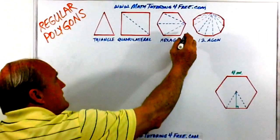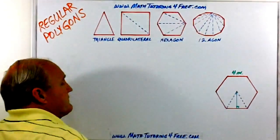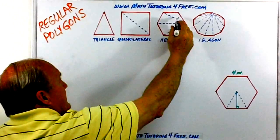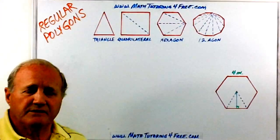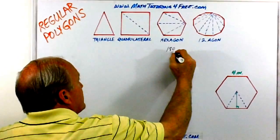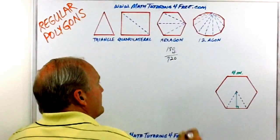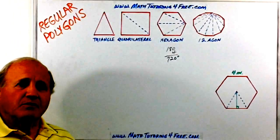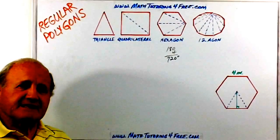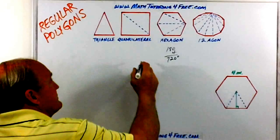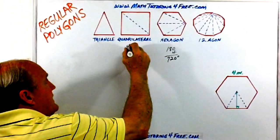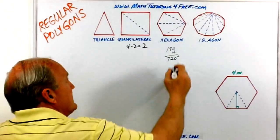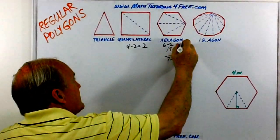For the hexagon, if we draw diagonals from one corner point to each of the other corner points, we're able to draw one, two, three, four triangles, so that would have 180 times four, which is 720 degrees. From that we learn we're going to have as many triangles as the sides minus two. In this case a four-sided figure: four minus two gives two triangles, two times 180 is 360. In the hexagon we had six sides, six minus two gives four triangles.